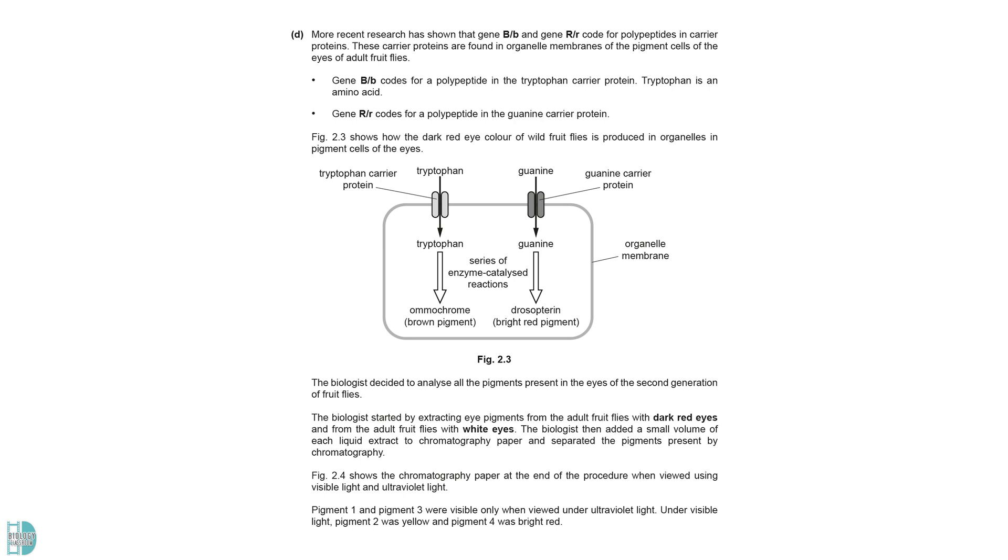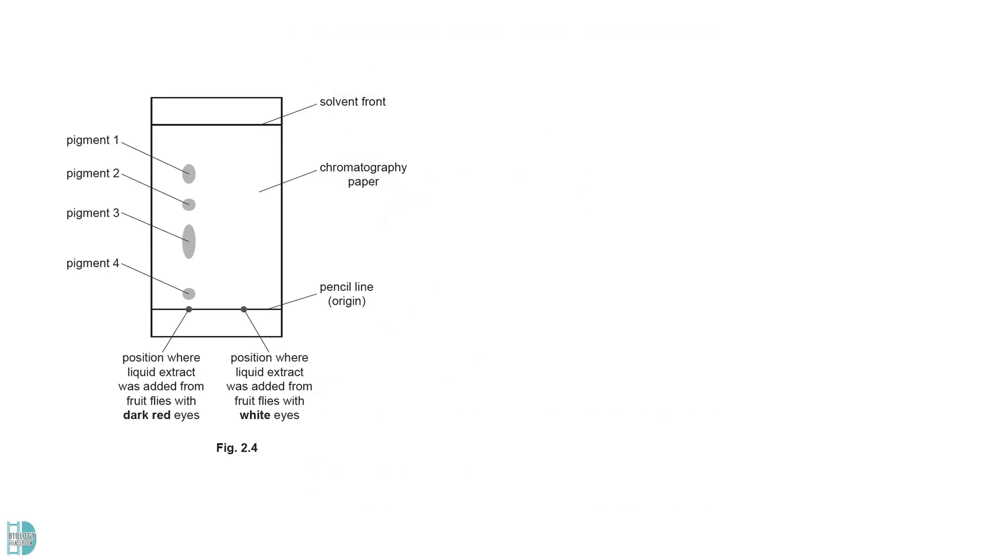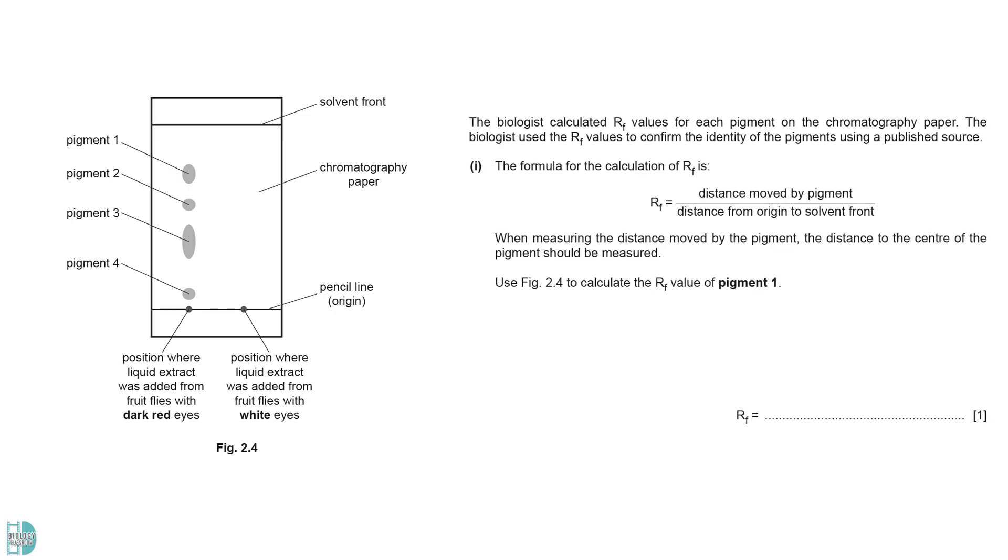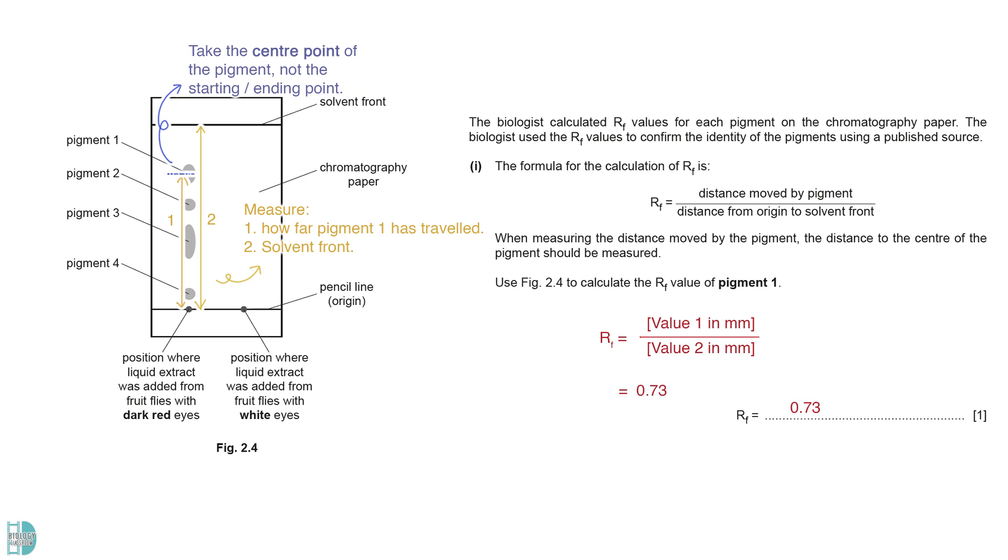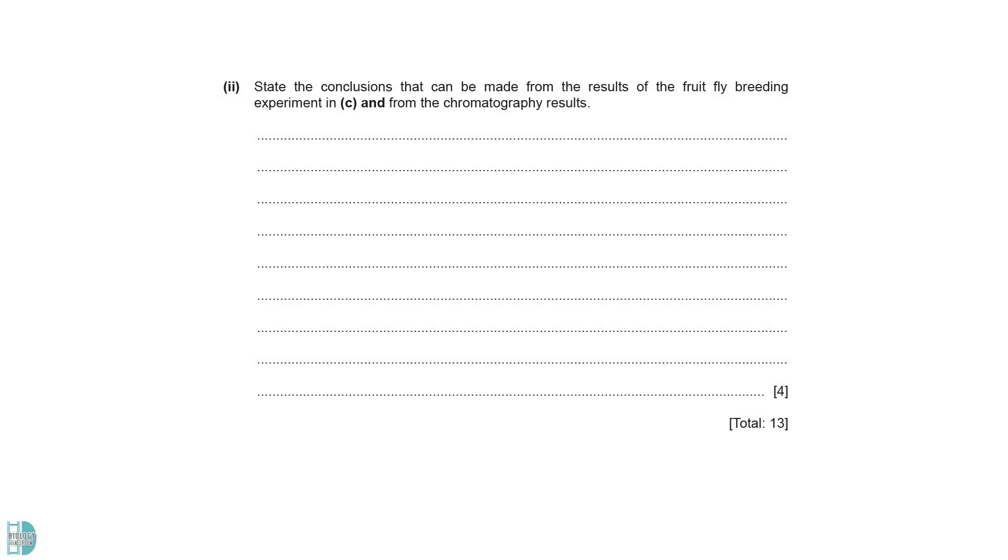D shows the carrier proteins coded by the B and R genes. Figure 2.4 shows the results of paper chromatography when the pigments in the eyes of the flies were analyzed. Part 1: Calculate the RF value of pigment 1. Use a ruler to measure how far the pigment has traveled from the origin and the distance of the solvent front from the origin. Note that you should take the center point of the pigment, not the starting point or the ending point. Express both values in millimeters and divide. On the printed paper, the answer is about 0.73.